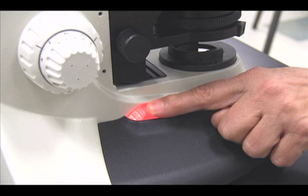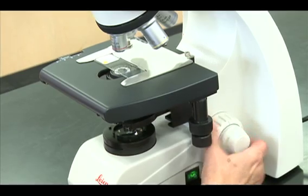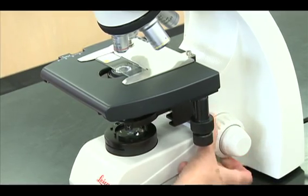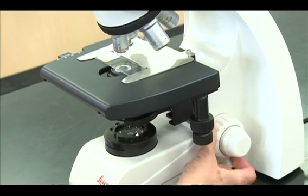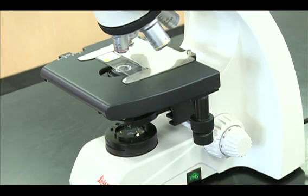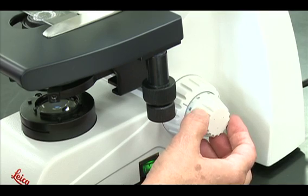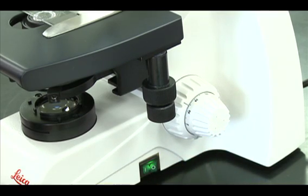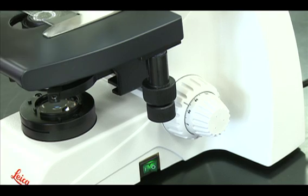Use the rheostat to increase the light to a comfortable viewing level. Use the coarse adjustment knob to raise the stage all the way up. Use the fine adjustment knob to lower the stage until the slide is in focus.